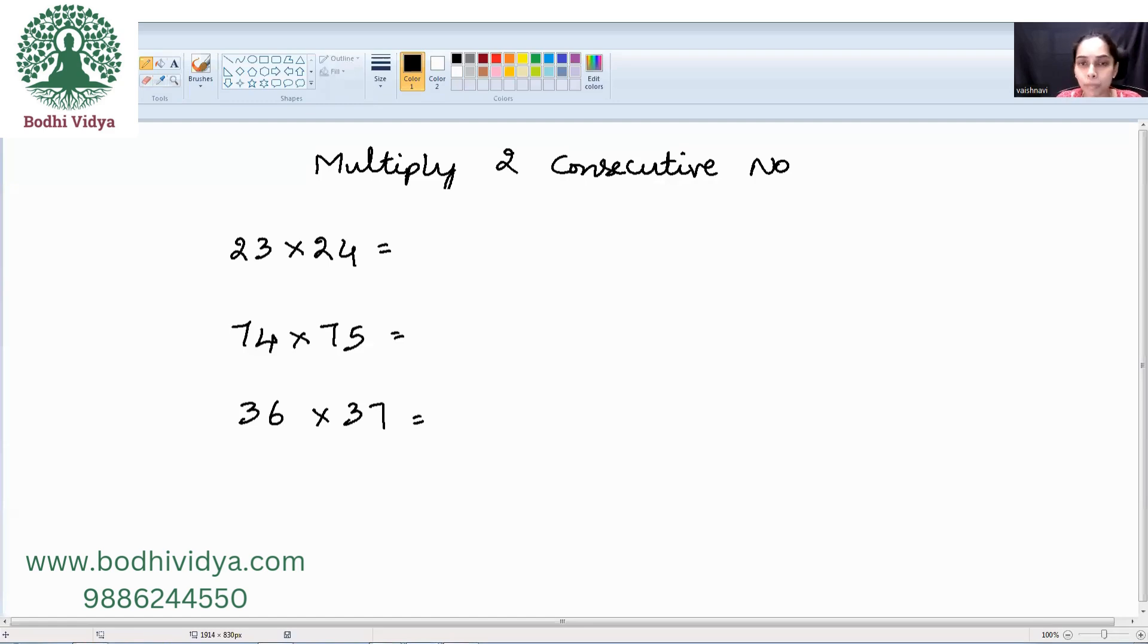In today's video, we shall learn how to multiply any two consecutive numbers. So, what do I mean by consecutive number? The number which comes immediately after that number. For example, the consecutive number of 36 is nothing but what? 37.